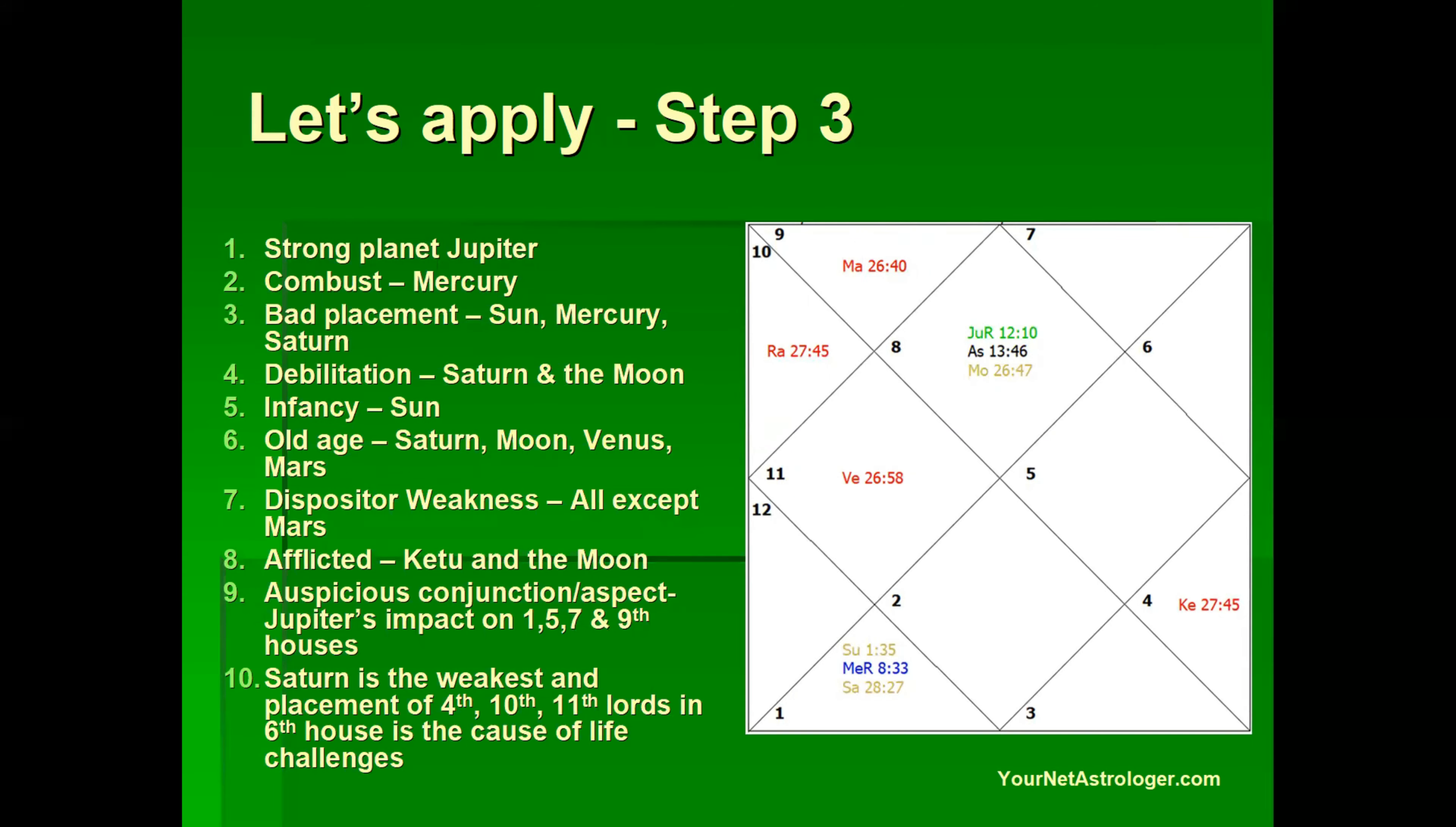Now we see which planets are debilitated. Saturn in Aries and Moon in Scorpio are debilitated planets. Planet Sun though exalted in Aries but it is weak due to being in infancy and placement. Now planets Saturn, Moon, Venus and Mars all these planets are in old age. And since only one planet Jupiter is fully strong, all planets except Mars suffer from weakness due to dispositor weakness also.